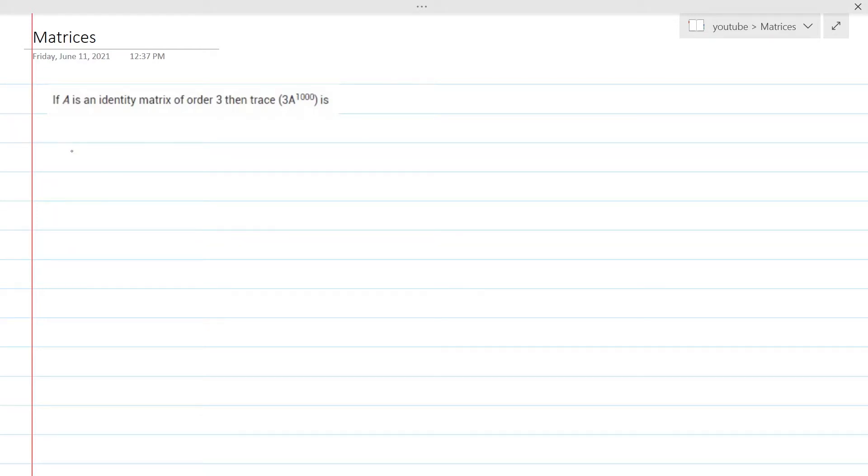Hello everyone, today we will be solving the question: if A is an identity matrix of order 3, then the trace of 3 into A to the power 1000 is.